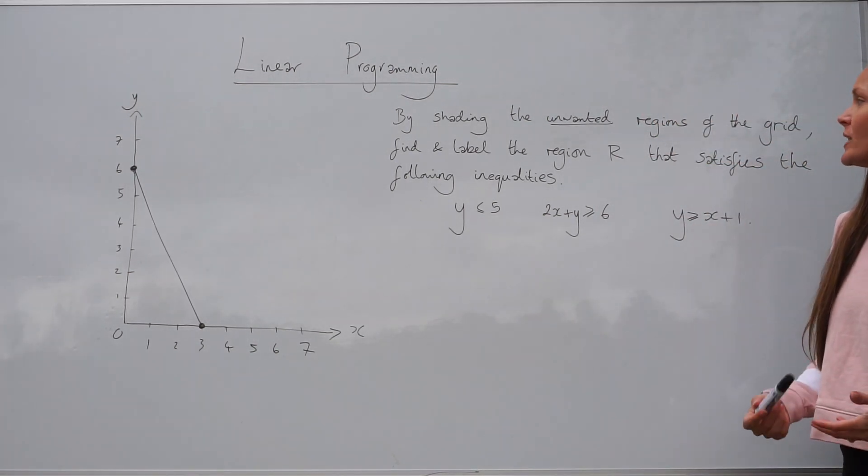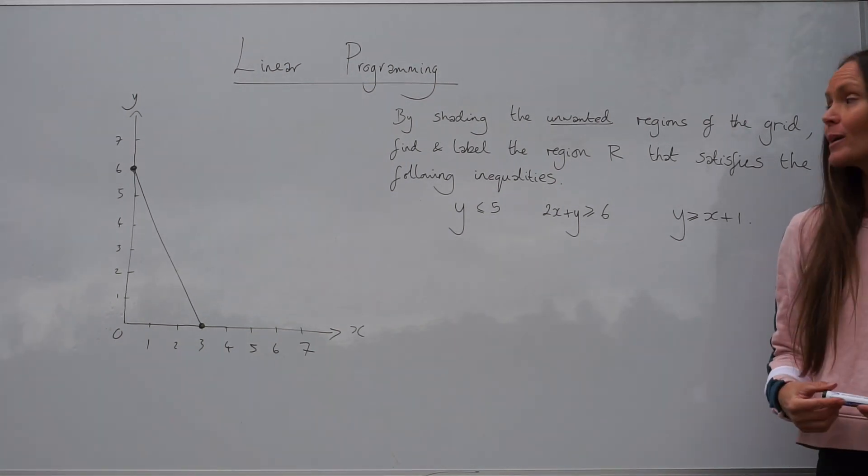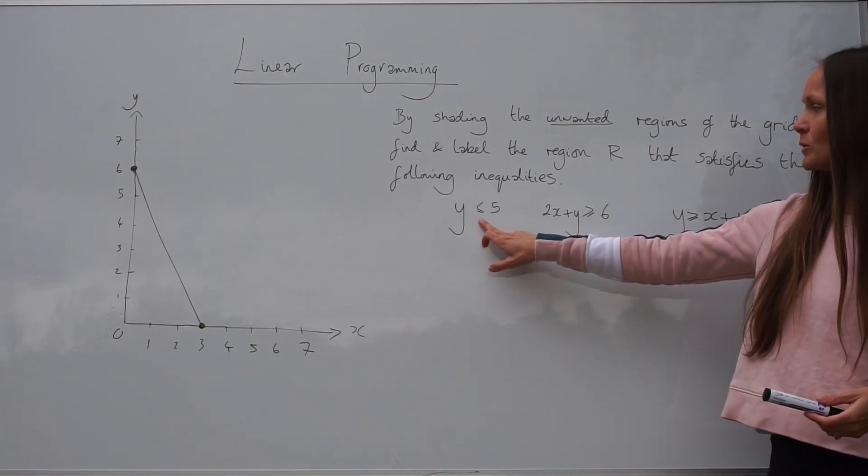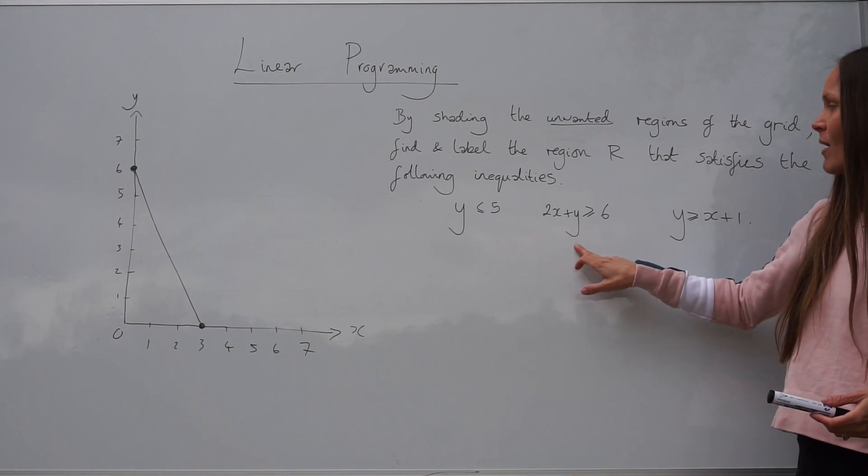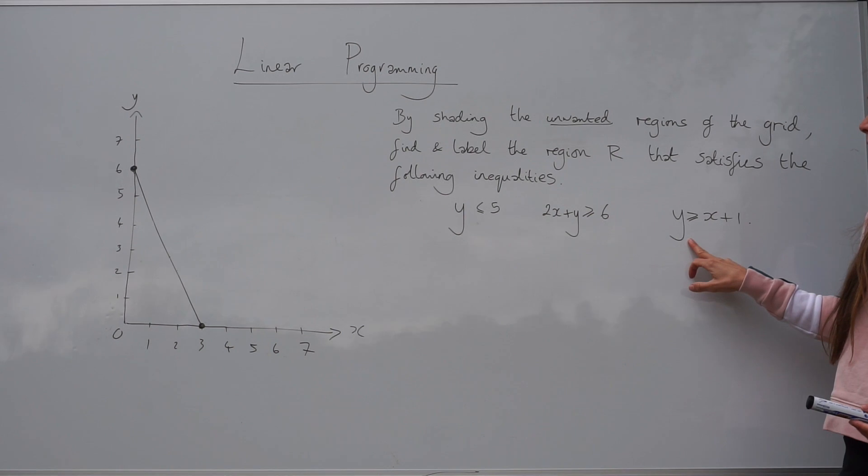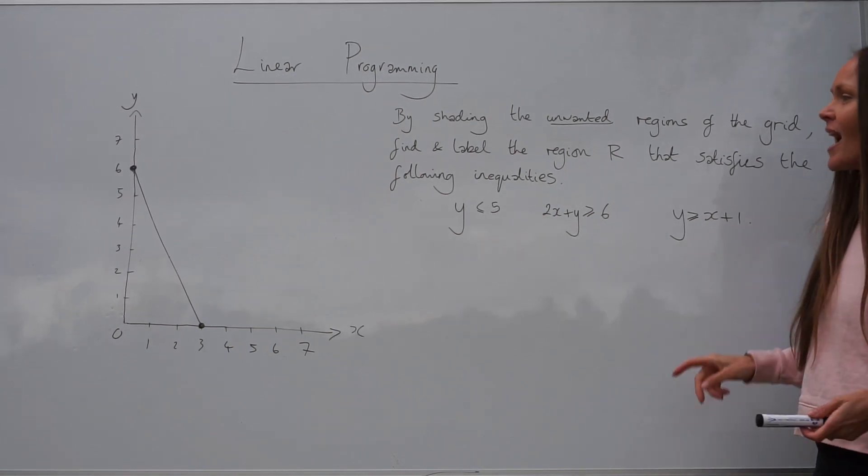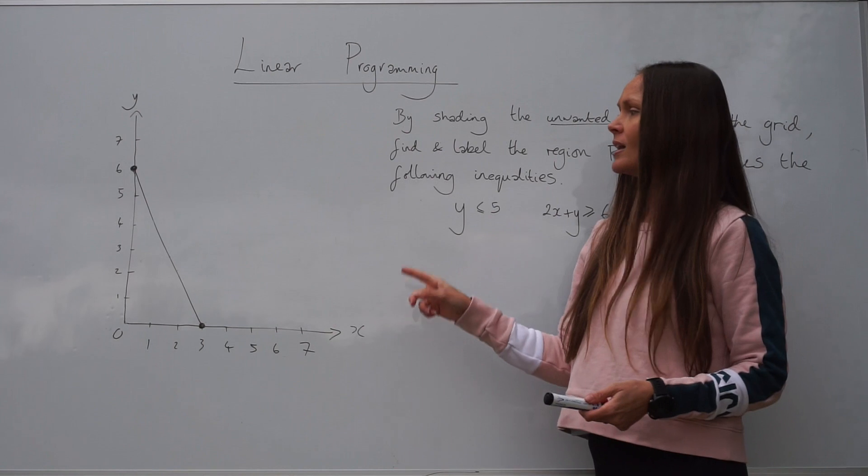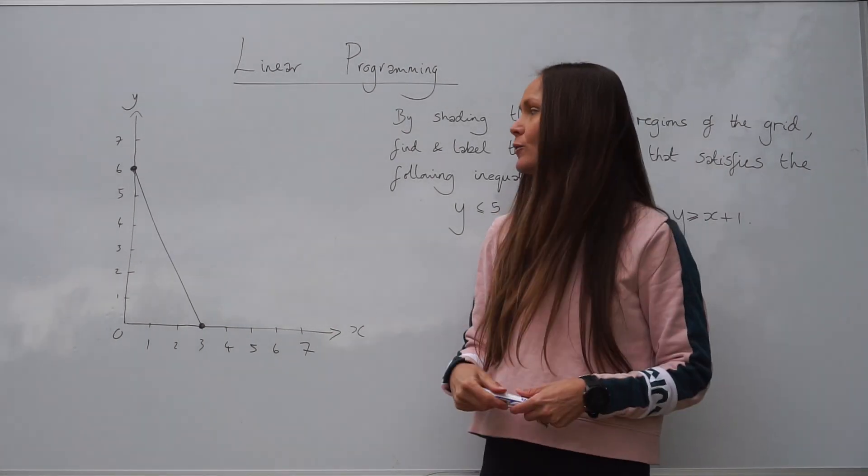find and label the region R that satisfies the following inequalities: y must be less than or equal to 5, 2x plus y must be greater than or equal to 6, and finally y must be greater than or equal to x plus 1. And here's the grid, and one of the lines has been drawn on already for us.